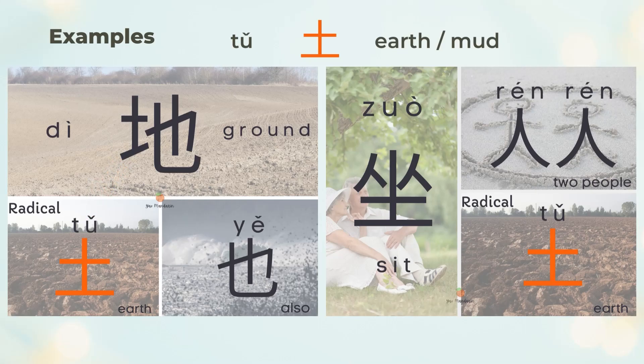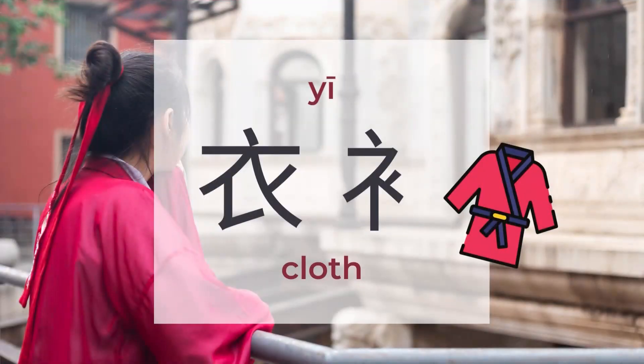坐 means to sit, and 人 means a person. Two people on the 土 (earth) gives you 坐, meaning to sit.